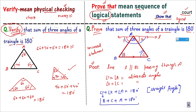So it is the same question, but done in two different ways. If you need to prove it, use the logical construction method. If you need to verify it, draw 2–3 diagrams and show by measuring. I hope now it is clear what is the difference between 'prove that' and 'verify that'.